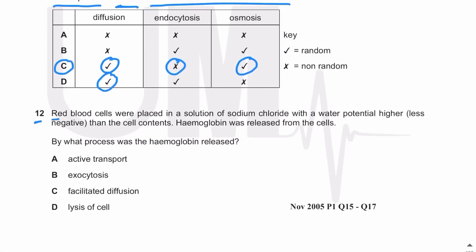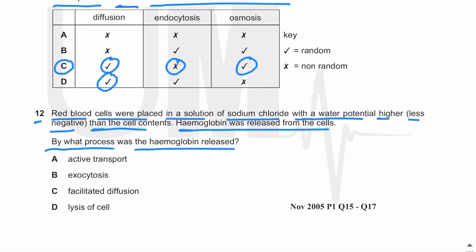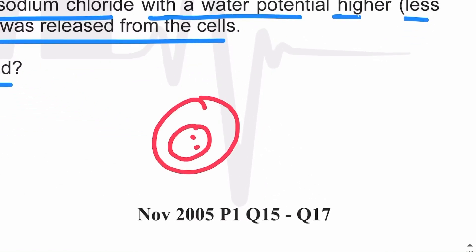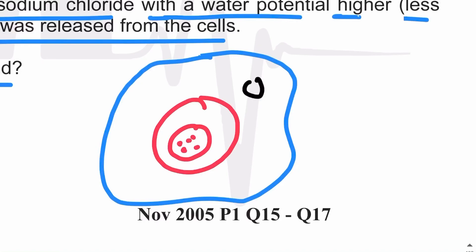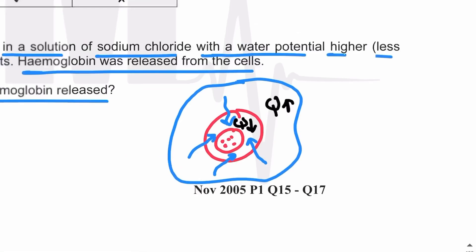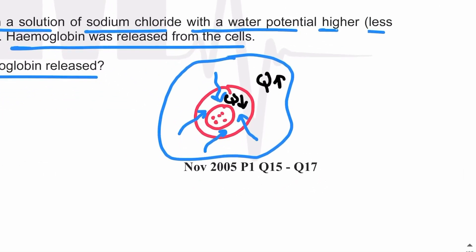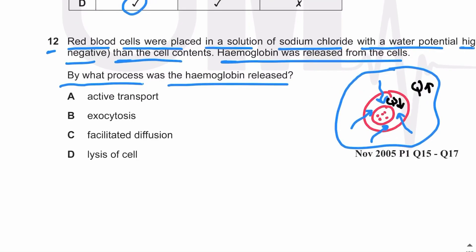MCQ number twelve: red blood cells were placed in a sodium chloride solution with a water potential higher or less negative than the cell contents. Hemoglobin was released from the cells — by what process? The solution has a higher water potential than the red blood cell, so water moves into the cell by osmosis, causing the red blood cell to burst open, leading to the release of hemoglobin. The answer is D — hemoglobin is released by lysis or the breakdown of the cell.